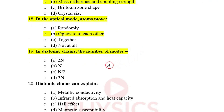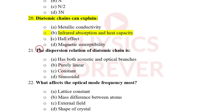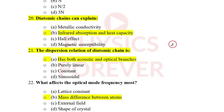In a diatomic chain, the number of modes is 2N. The diatomic chain can explain IR absorption and heat capacity. The dispersion relation of the diatomic chain has both acoustic and optical branches (correct option). The optical mode frequency is most affected by the mass difference between atoms. I hope this video is useful — please like, subscribe to our channel for further updates, and share with your friends. Thank you.